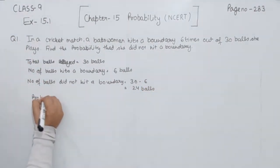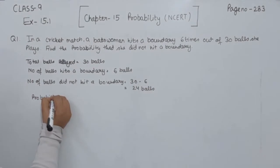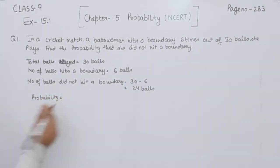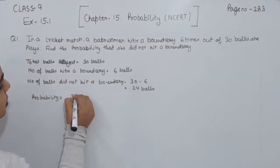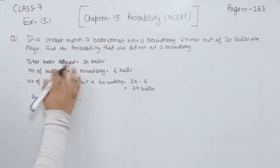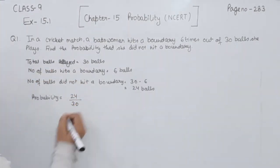Now, we are going to find the probability. Probability is equal to the number of balls did not hit a boundary. That means 24 upon total number of balls. So, we are having 30.